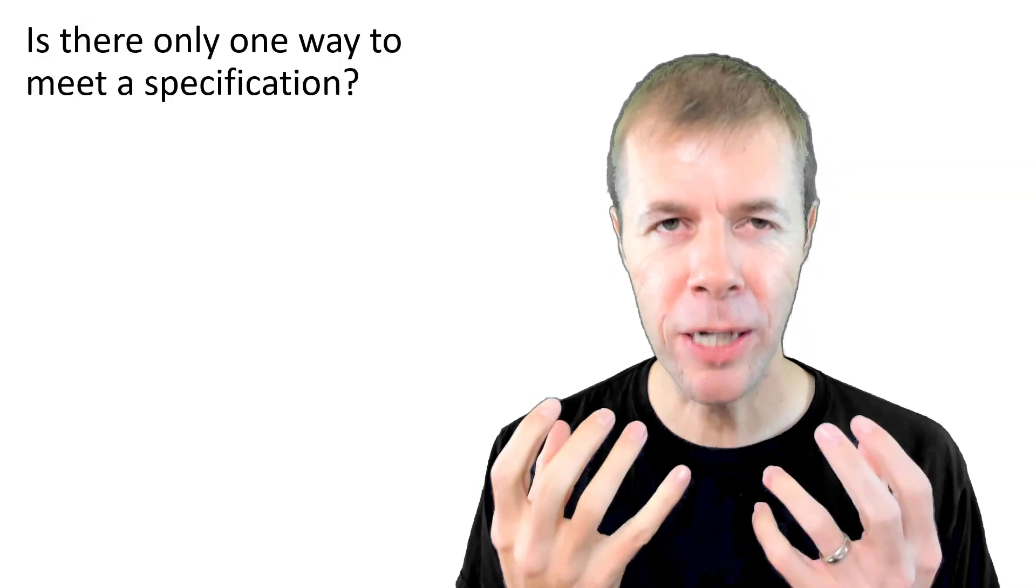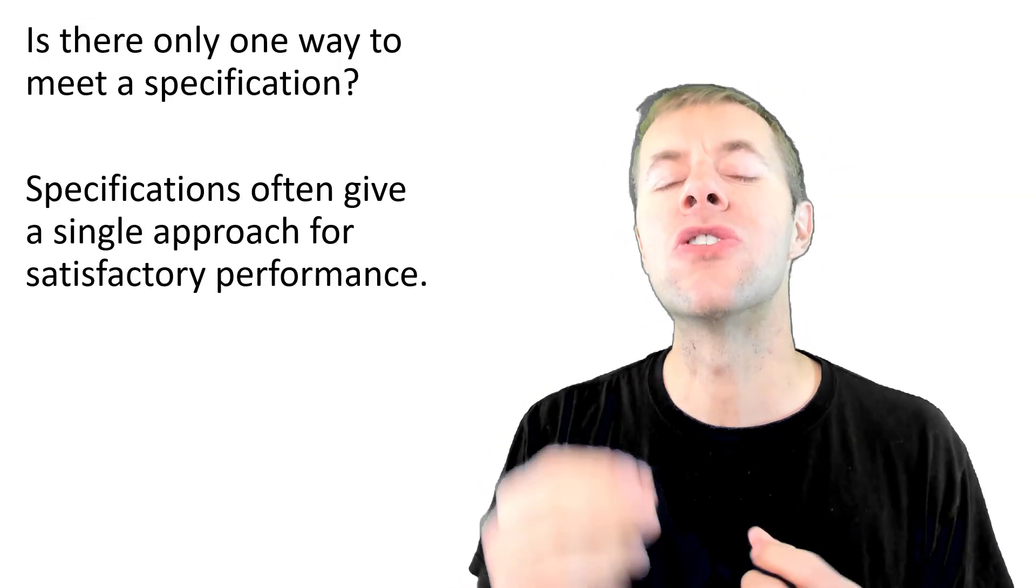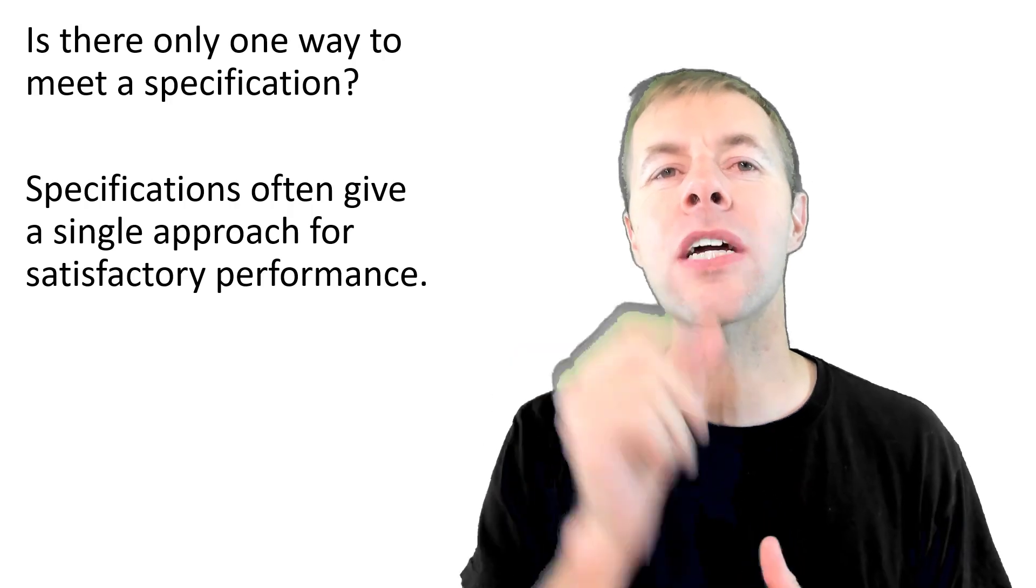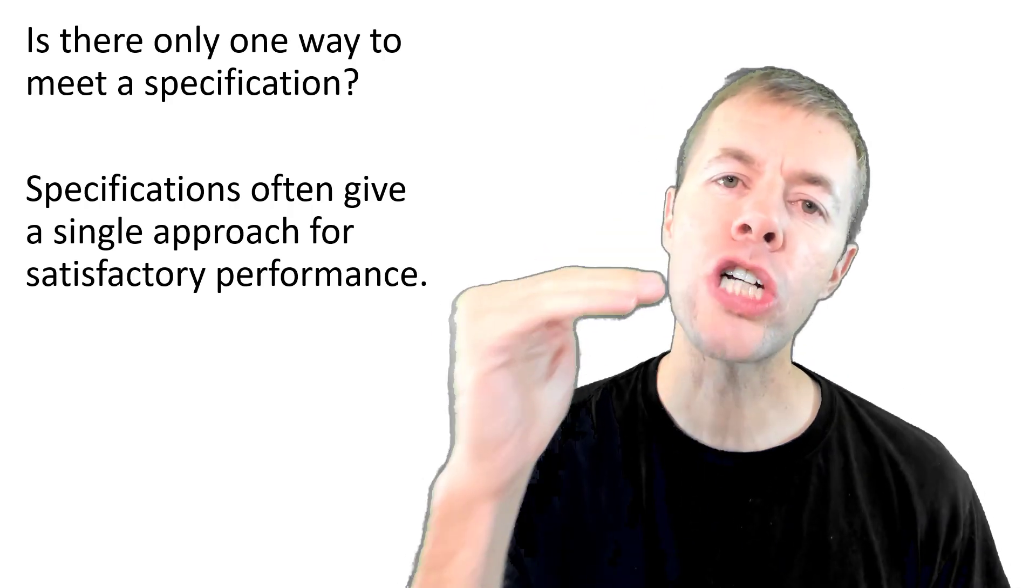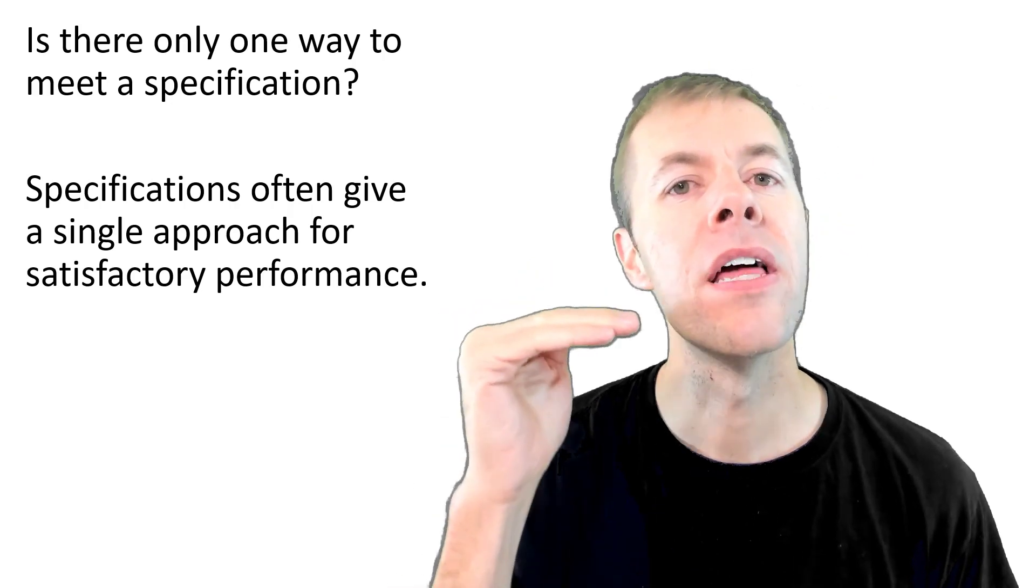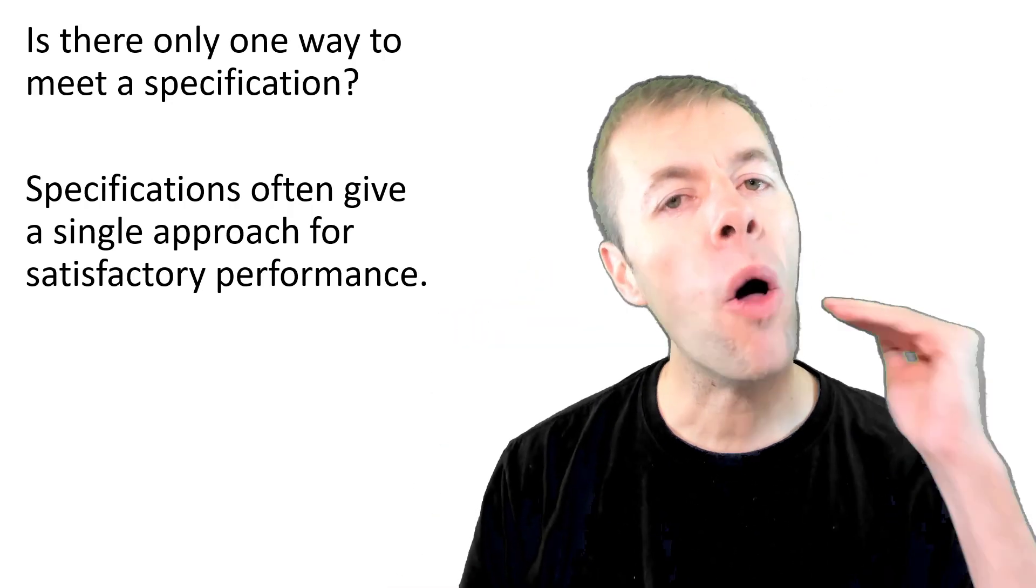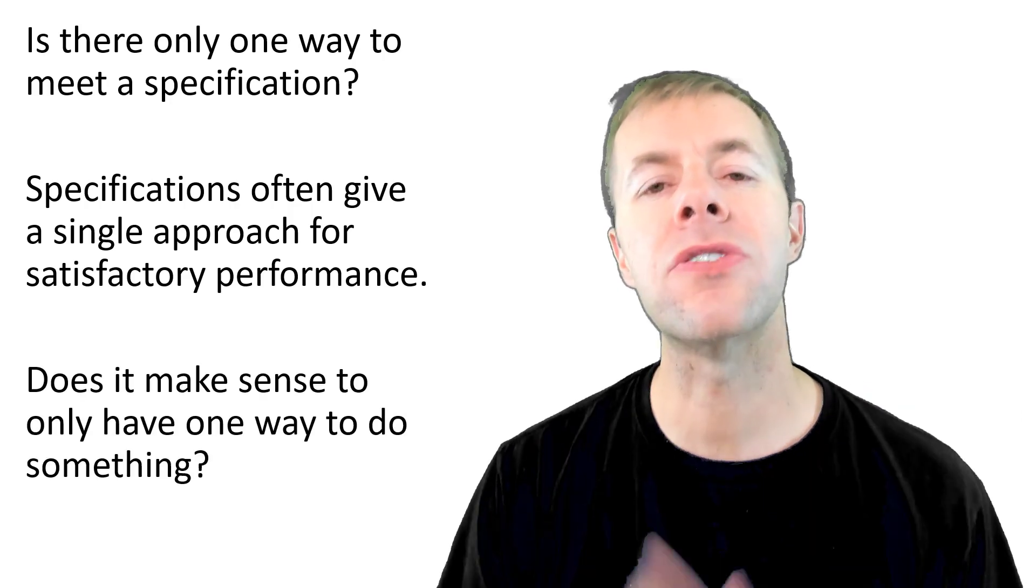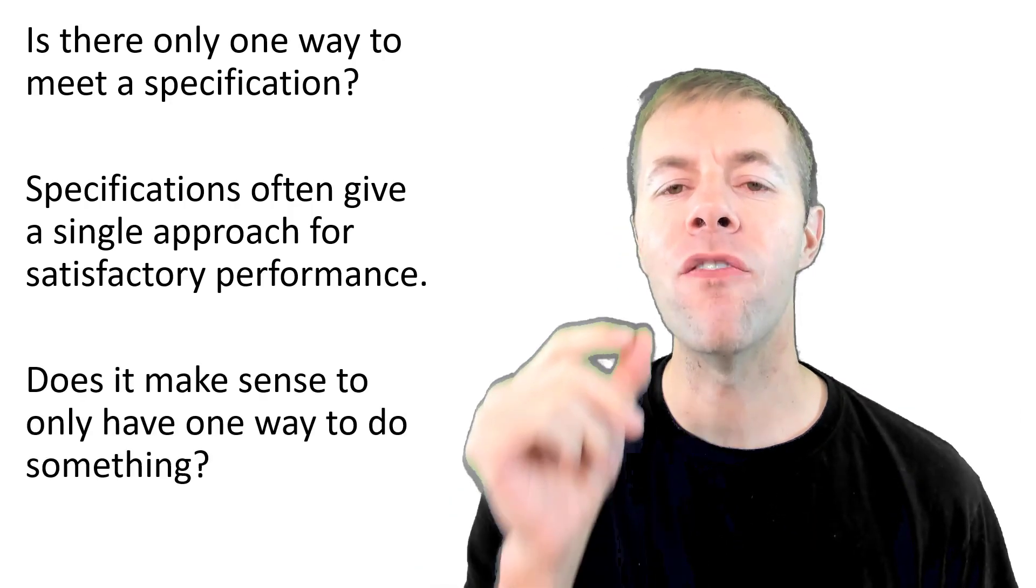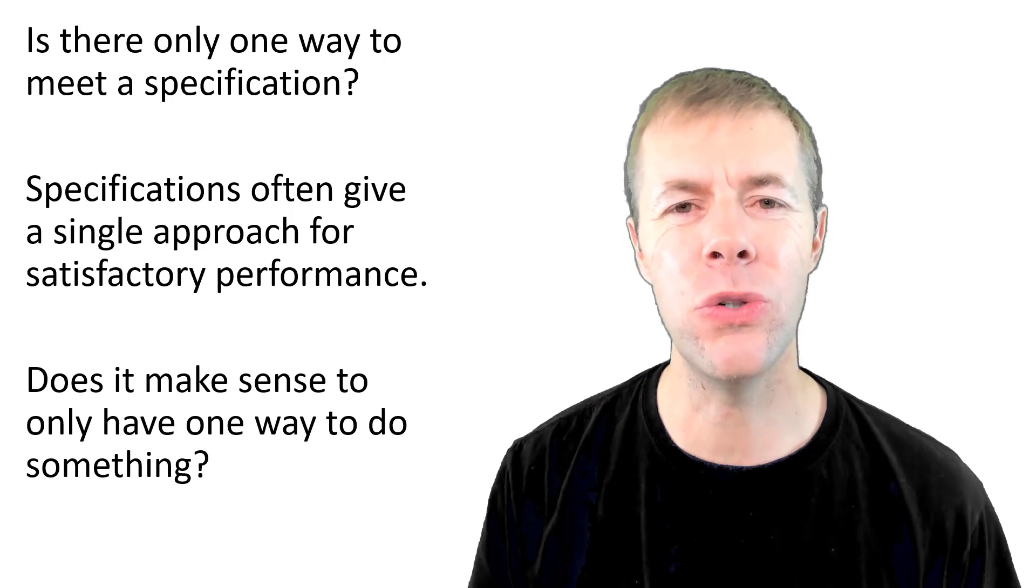Is there only one way to meet a specification? Specifications often give a single approach for satisfactory performance. They say you shall provide this. You shall meet this criteria. Does it make sense to only have one way to do something?